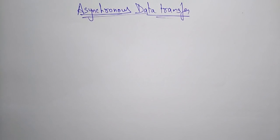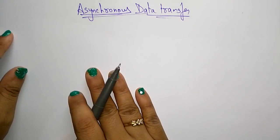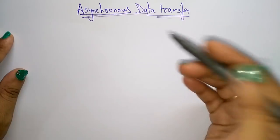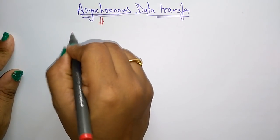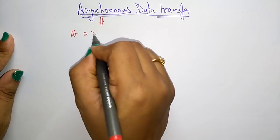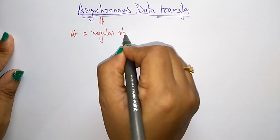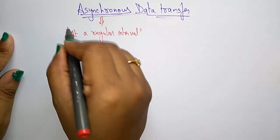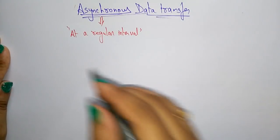Students, let us continue with the data transfer concept. In the previous video I explained the basic concept of data transmission. Now let us see what is asynchronous data transmission. Asynchronous means data can be transferred at any time — that is what you call asynchronous.